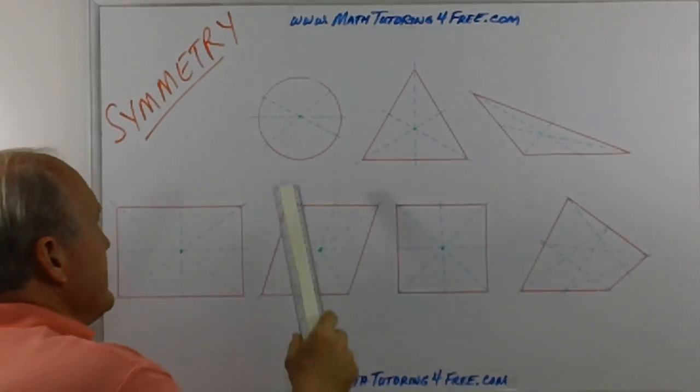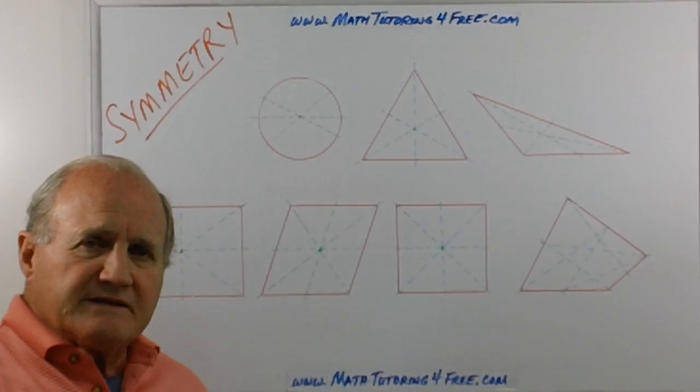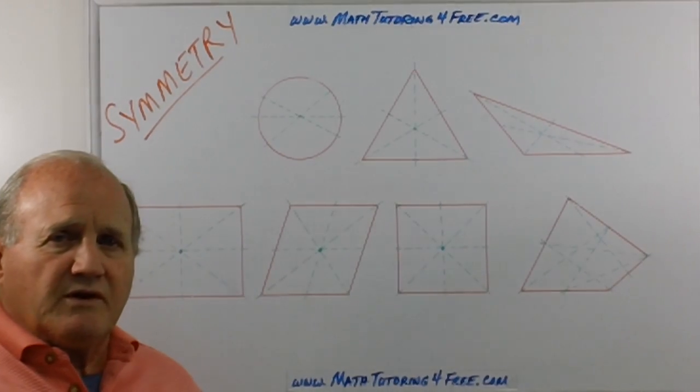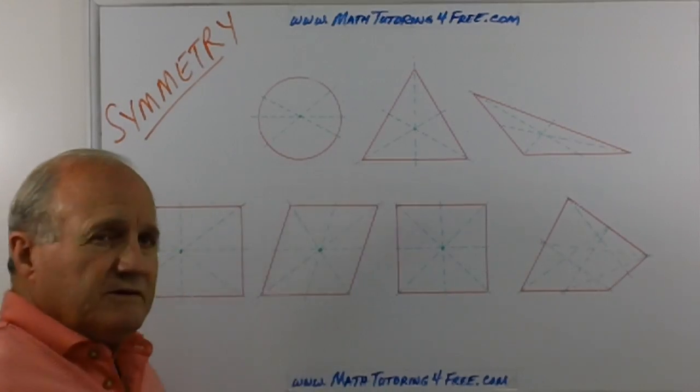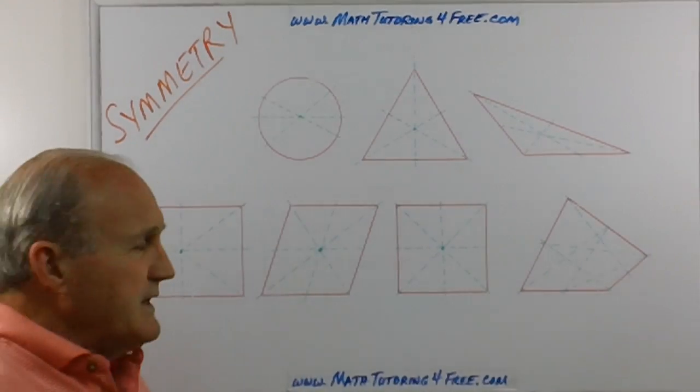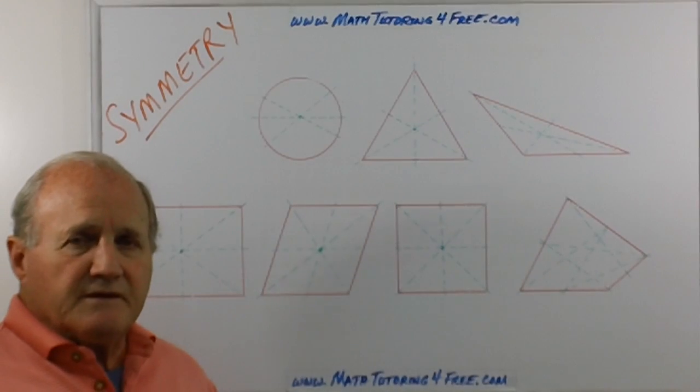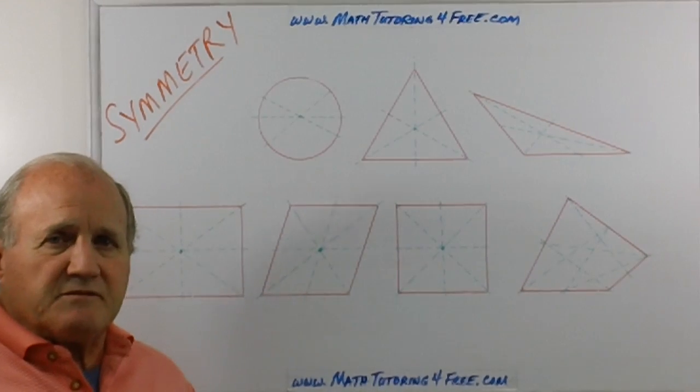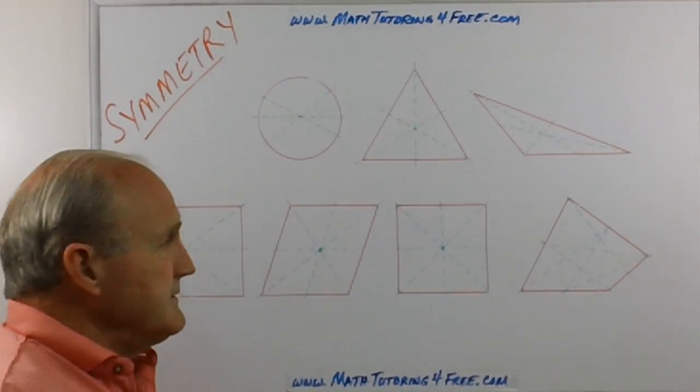For instance, in the case of a circle, any diameter of the circle would be called a line of symmetry because it cuts that circle in half and there would be an infinite number of lines of symmetry just as there are an infinite number of diameters.